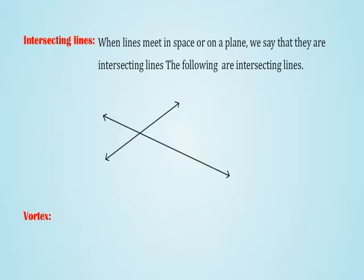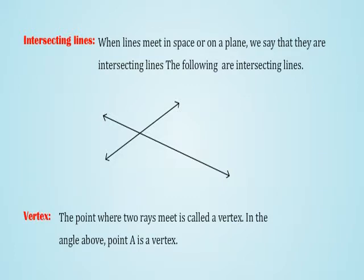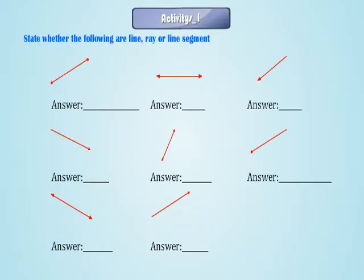Vertex: The point where two rays meet is called a vertex. In the angle above, point A is a vertex. State whether the following are line, ray, or line segment.